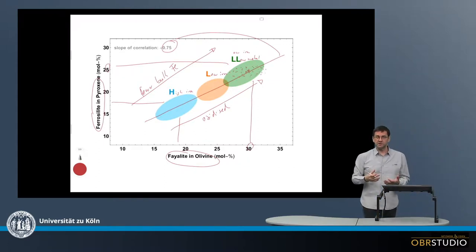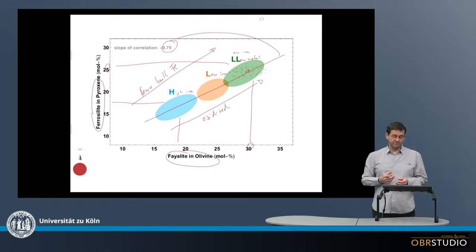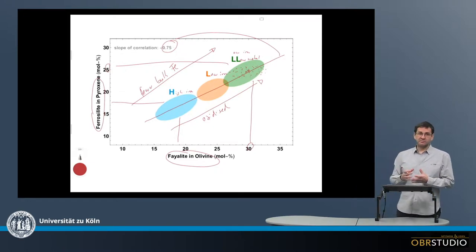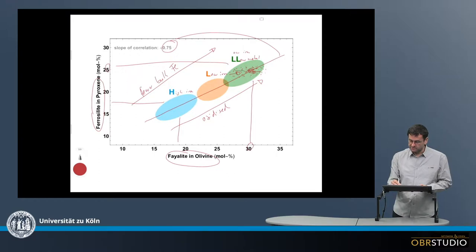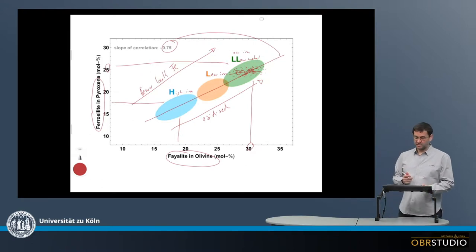And this is because, initially, olivine and pyroxene are not in equilibrium—they formed individually within the protoplanetary disk. And later, when they're on the parent body and get thermally overprinted, they then basically exchange their iron and magnesium and decrease their initial range of composition.